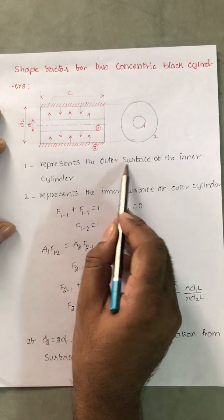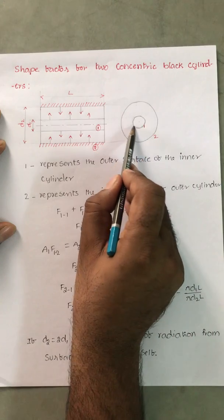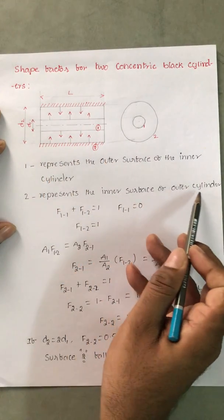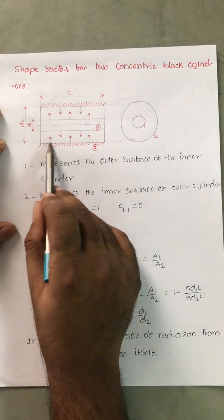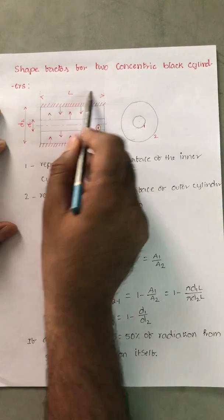1 represents the outer surface of the inner cylinder. 2 represents the inner surface of the outer cylinder. That means heat cannot get outside because it is fully insulated.